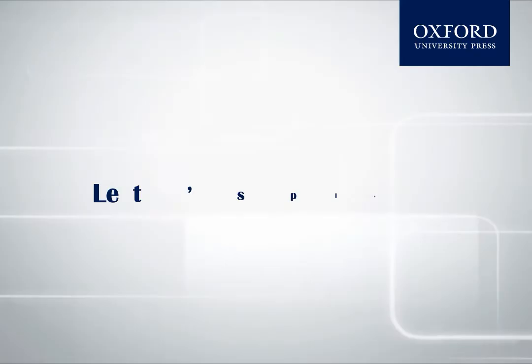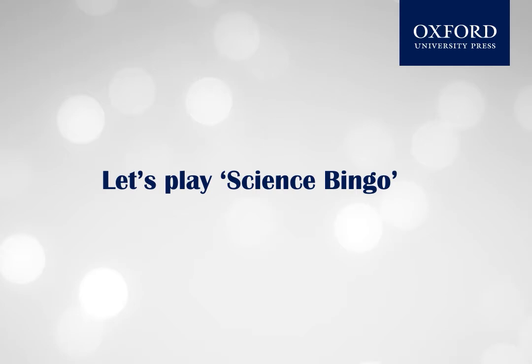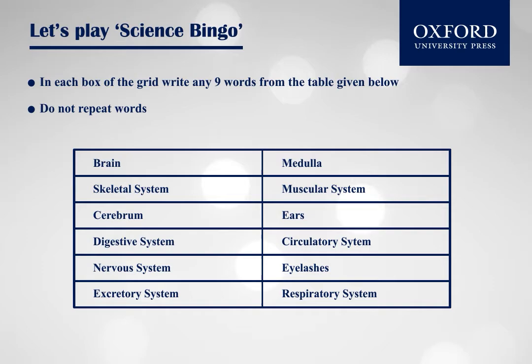Ask the students to make a 3x3 grid like this. Then, in each box of the grid, ask them to write any 9 words from the table given below. The words in this table have been taken from New Oxford Primary Science Book 3, Unit 1: The Human Body. Ask them not to repeat words.